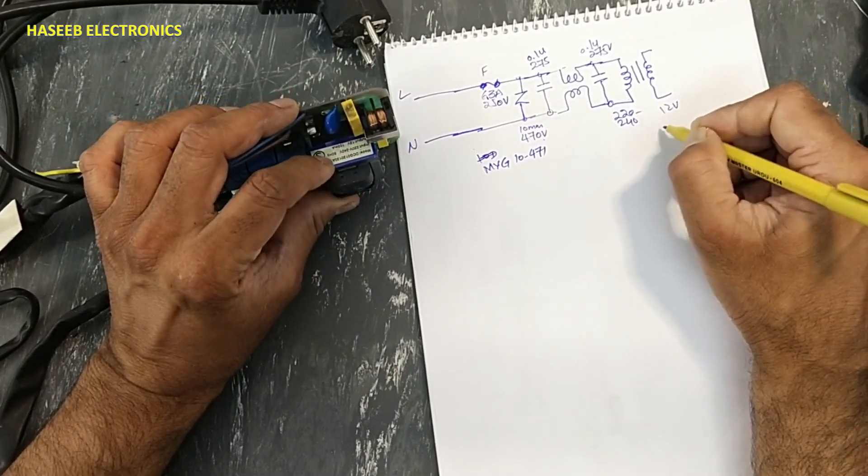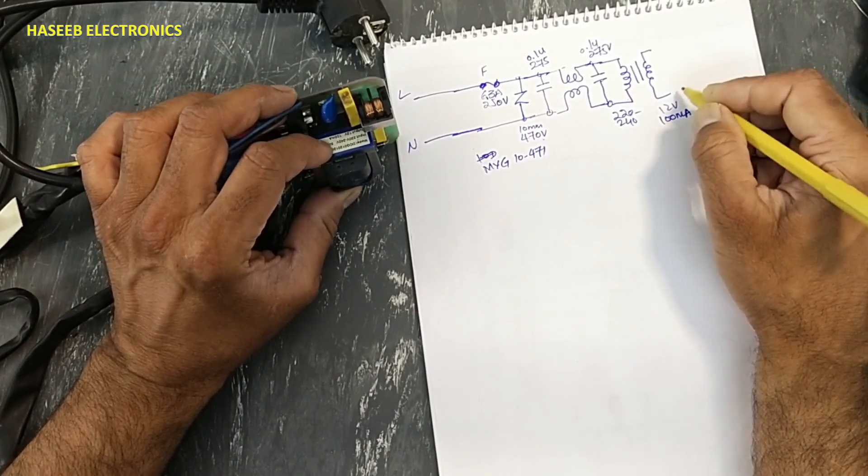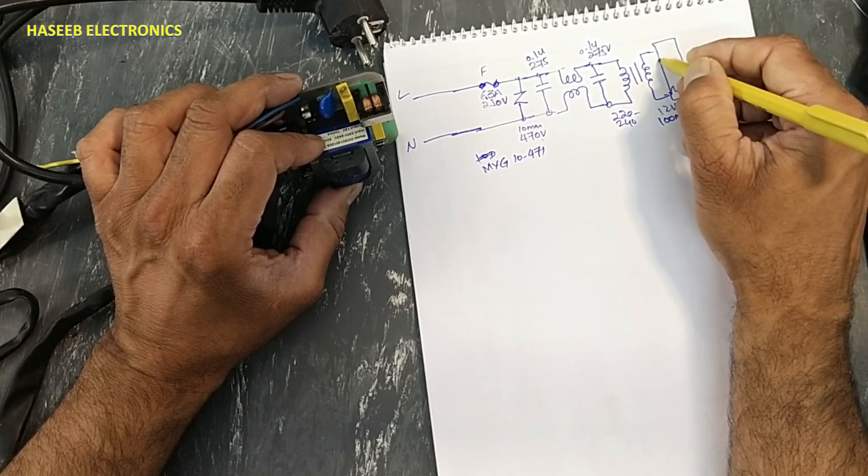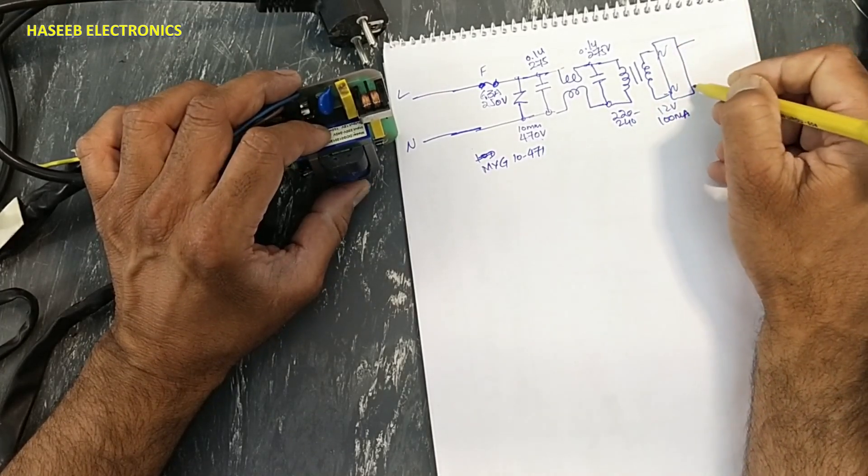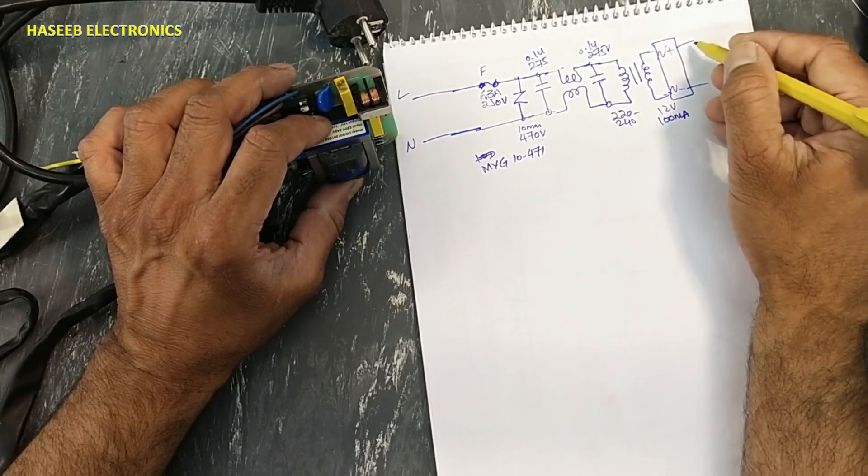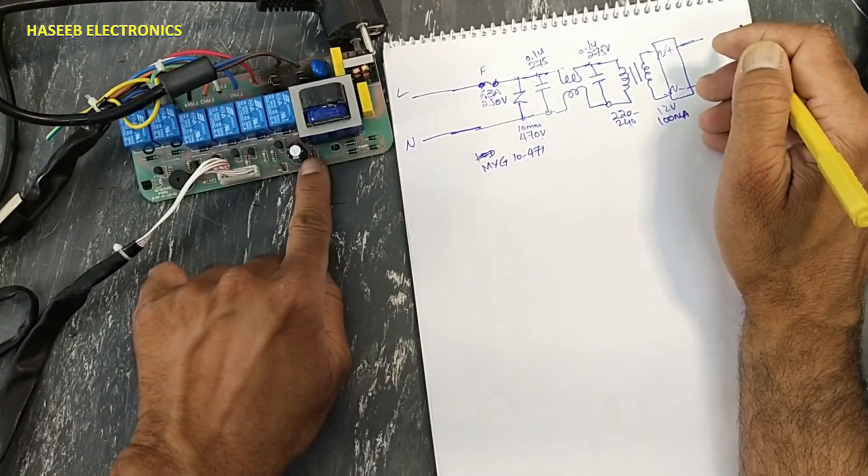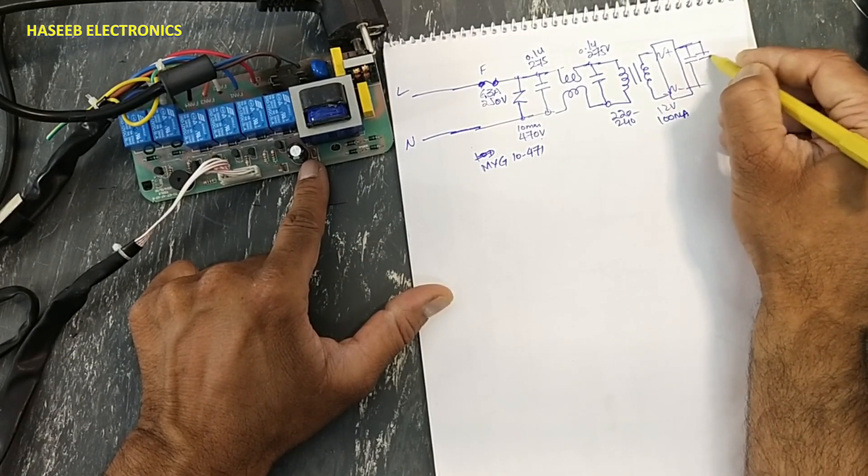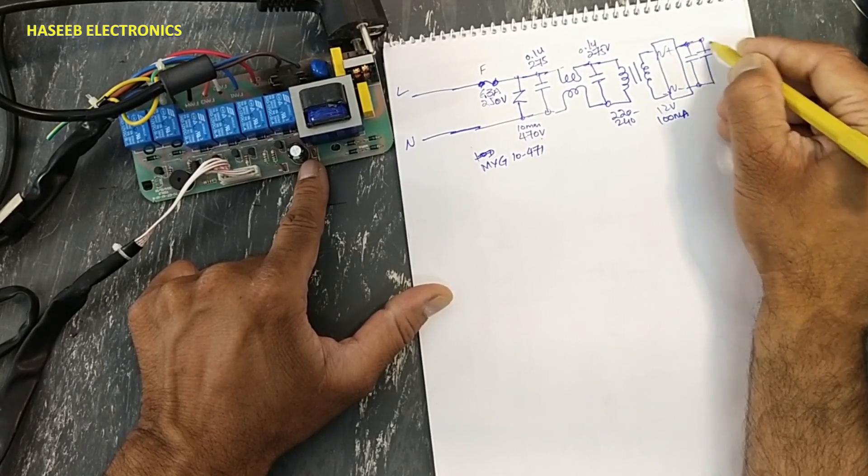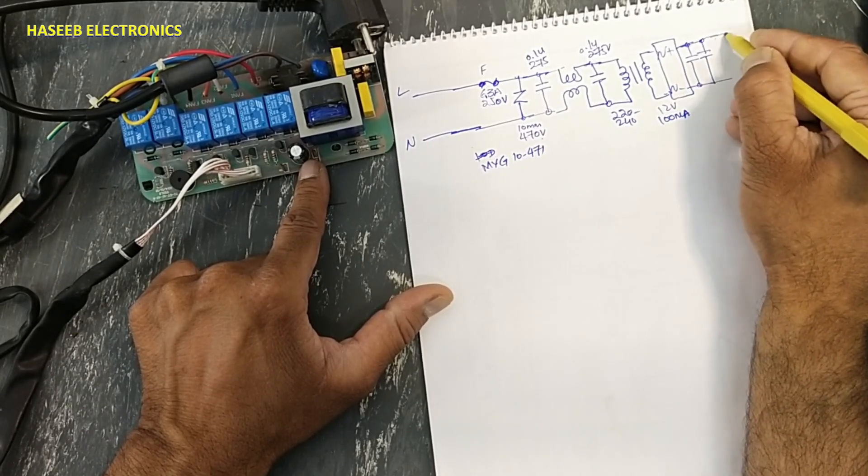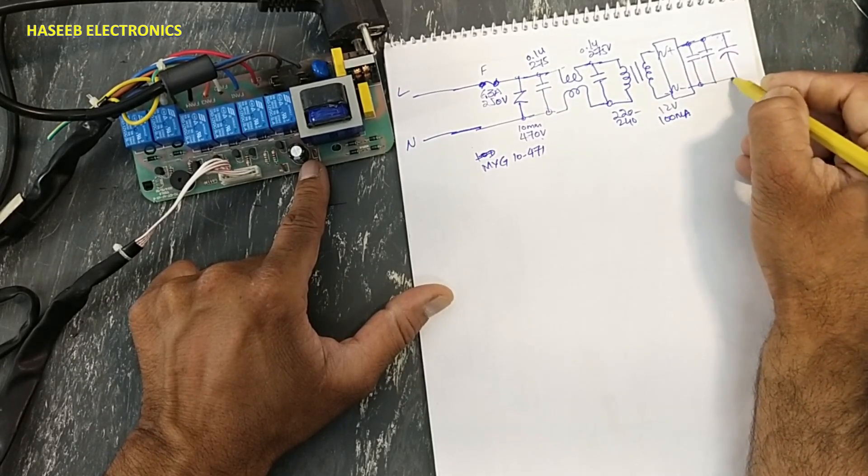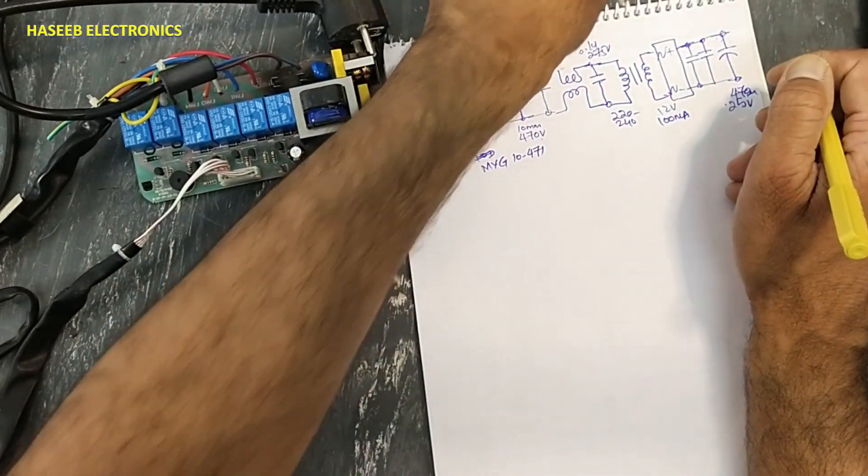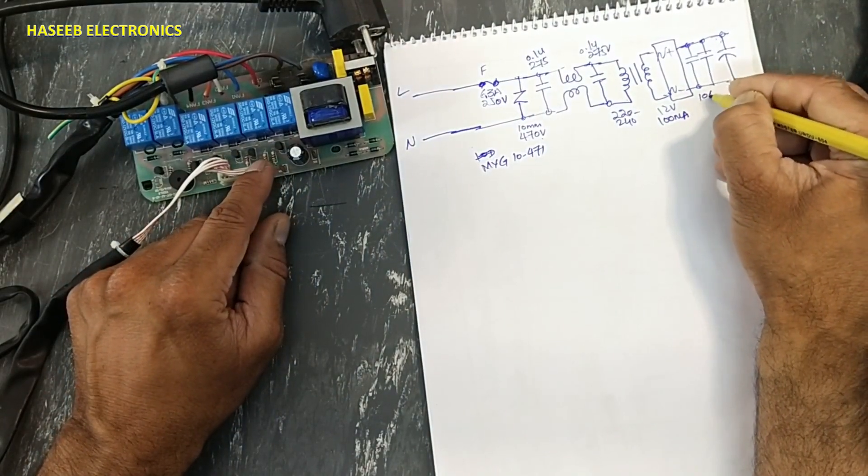These voltages are reaching this transformer. It is 220 to 40 volt in, 12 volts 100 milliampere output. Then it is connected to a bridge rectifier. AC, AC, AC here. It will provide positive and negative. At the positive, we have two capacitors: 100 nanofarad.